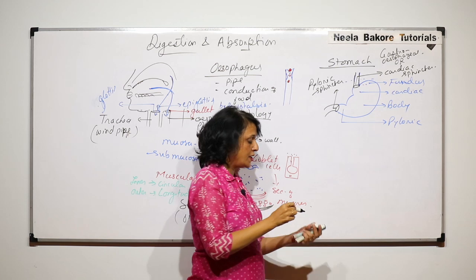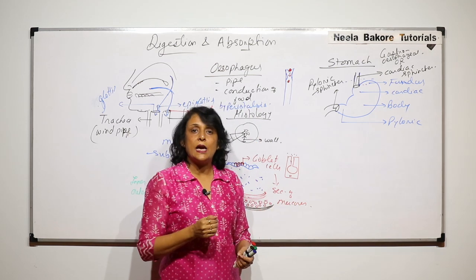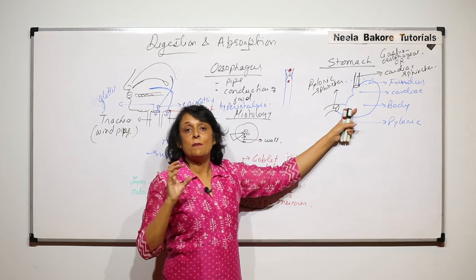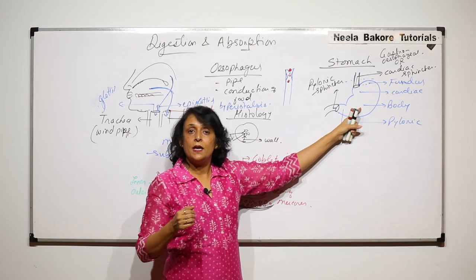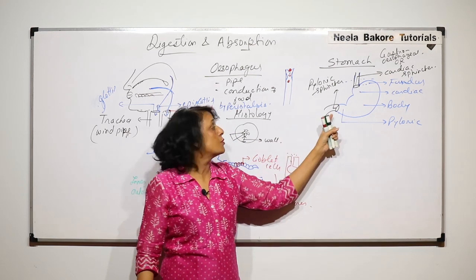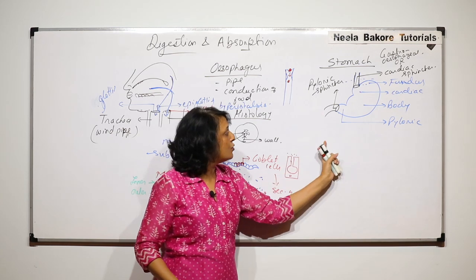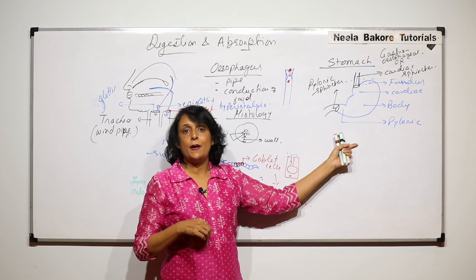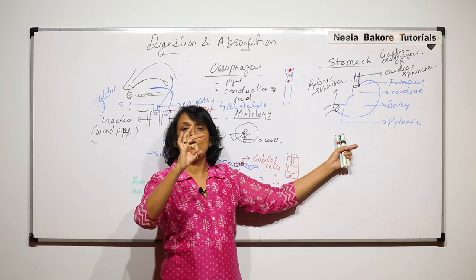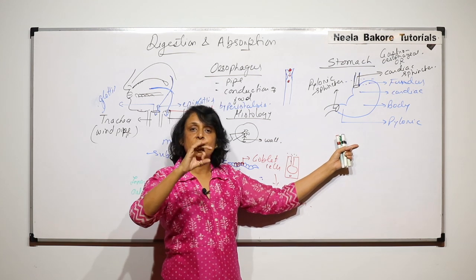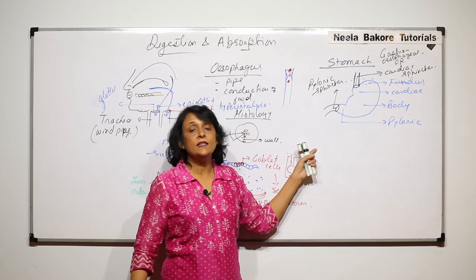The sphincters regulate how much food will pass ahead. Suppose we have eaten food — it stays in the stomach for 3-4 hours. The whole material does not go into the small intestine at once; it releases slowly so that the enzymes can properly act and digestion can occur. The sphincter is like a circular muscle that opens slowly, lets some food into the intestine, then closes again.